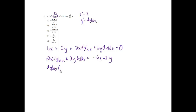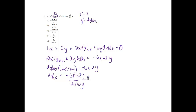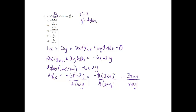Next I factor out dy/dx, giving dy/dx times (2x plus 2y) equals negative 6x minus 2y. To isolate dy/dx, I get (negative 6x minus 2y) over (2x plus 2y). Factoring negative 2 from the numerator gives (3x plus y), and factoring 2 from the denominator gives (x plus y). The 2s cancel, leaving negative (3x plus y) over (x plus y), which is option B.